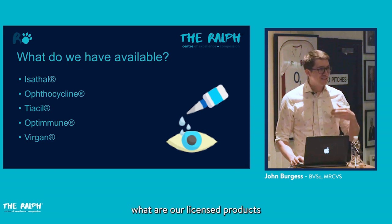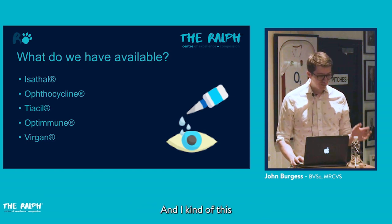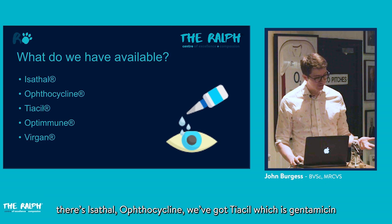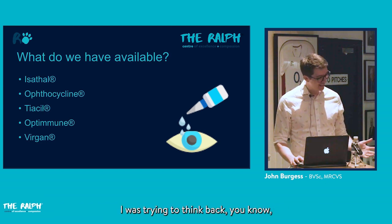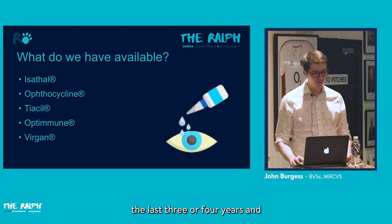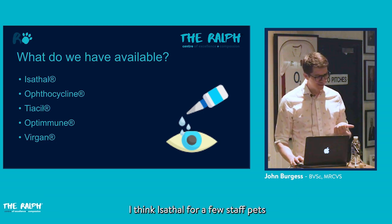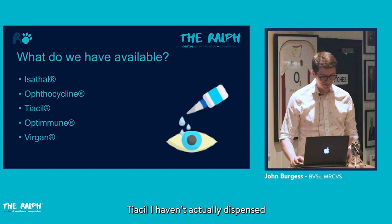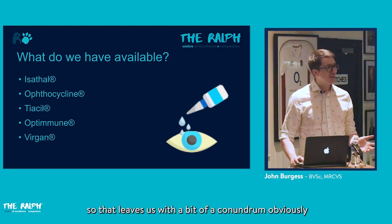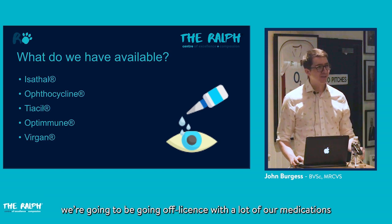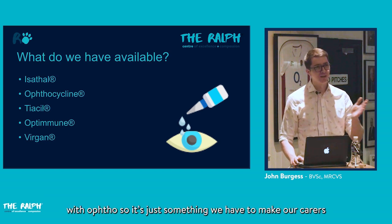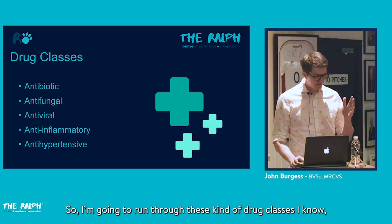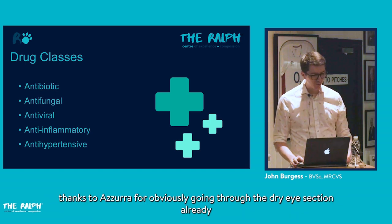Looking at licensed veterinary products, there's Isothyl, Opticyclin, Tiacil which is gentamicin, and then Optimune and Virgan. In practice over the last three to four years, Isothyl was used for a few staff pets, Opticyclin for one ulcer, and Tiacil has not been dispensed. Optimune and Virgan are used regularly. This means we're often going off-license with many of our ophthalmic medications, which carers need to be made aware of.